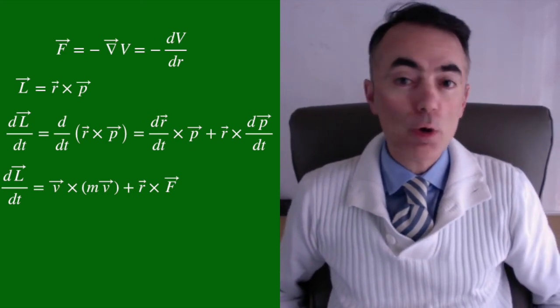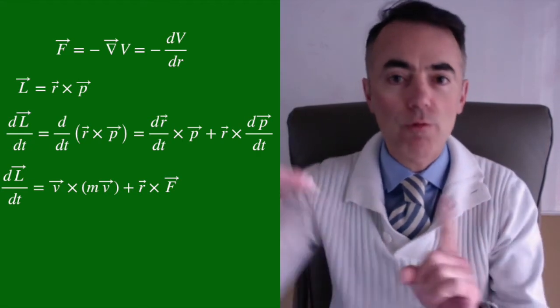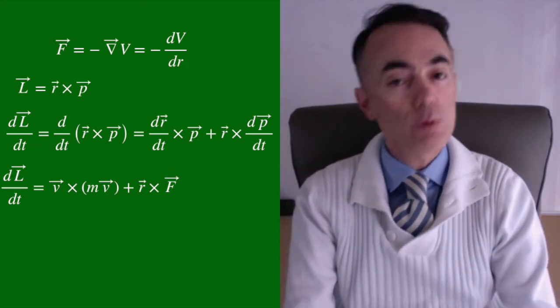First, the velocity is parallel to itself, so this first cross product is zero. And also the central force is anti-parallel to r, so the second cross product is also zero.